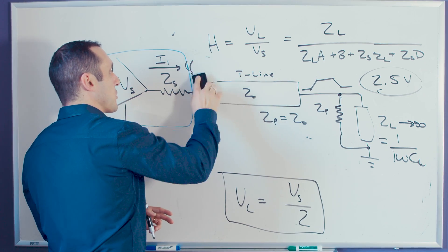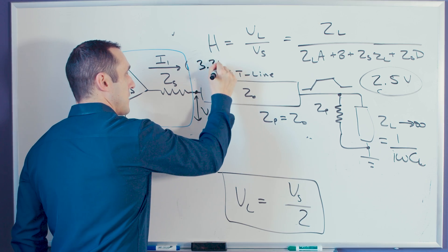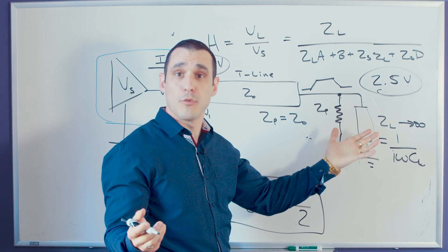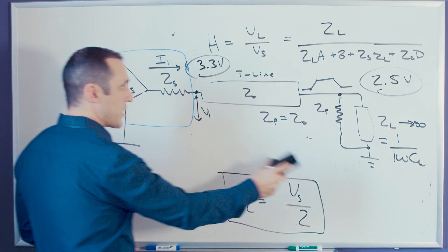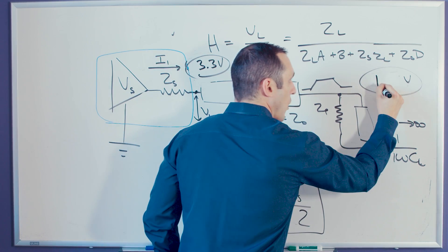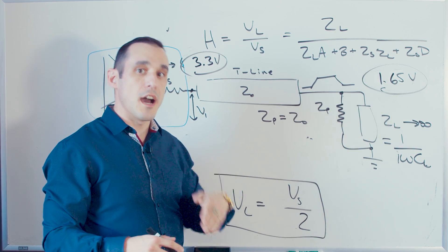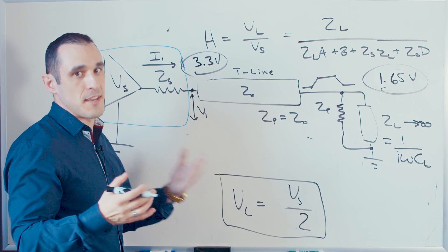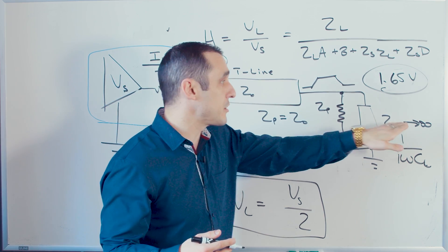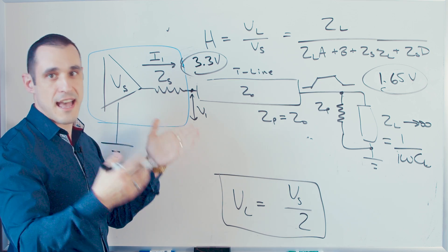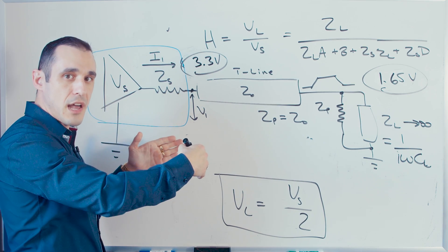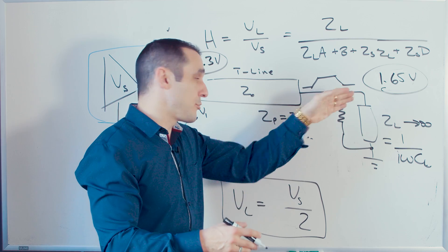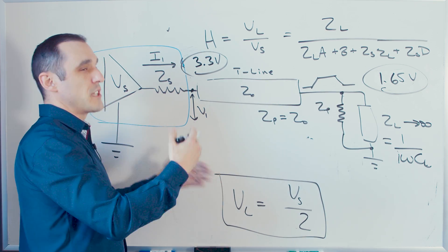Suppose instead of 5 volts we source 3.3 volts, with a load that toggles at a 1.8-volt signal level — a 1.8-volt interface. Sending 3.3 volts to a 1.8-volt interface with both terminations would give us a read of 1.65 volts, which has a higher chance of being above the high logic threshold, essentially creating a kind of level shifter. However, this is not the typical way to shift from a 3.3-volt interface down to a 1.8-volt interface. Typically you would use a dedicated level shifter component powered by two different supplies, sourcing a duplicate of the 3.3-volt signal at 1.8 volts to send to the receiving component.